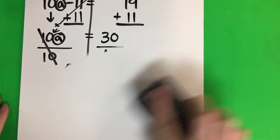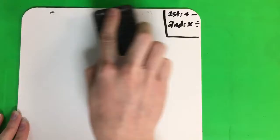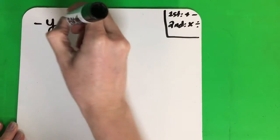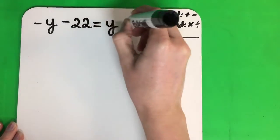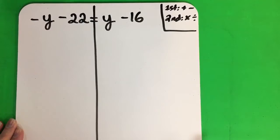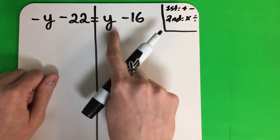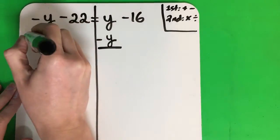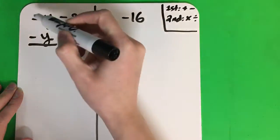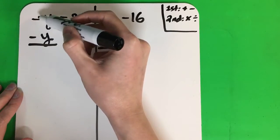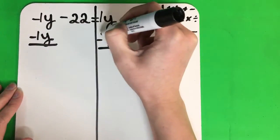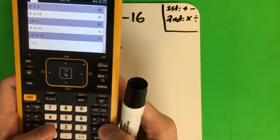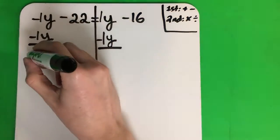Let's try another one: negative y minus 22 equals y minus 16. Put your line. Which y do I move? The right — always move the right — siempre la derecha. This is positive y. The opposite is negative, so minus y. Copy minus y. Now, if there's no number in front — si no hay número en frente — it's 1 — es 1. So let's put our 1s. Negative 1 minus 1: let's put that in the calculator — negative 1 minus 1. Negative 2. Copy: negative 2y.